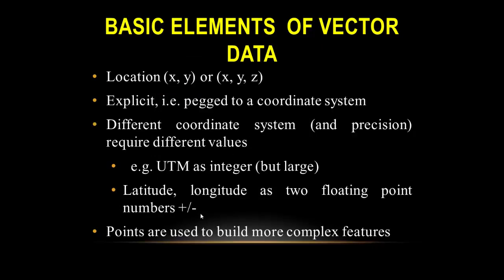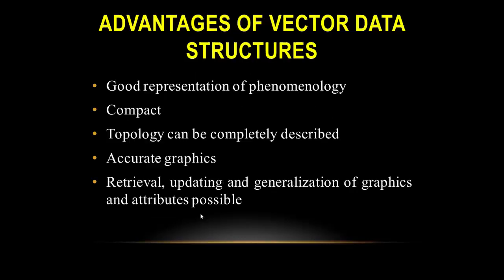The basic elements of vector data: for location, if 2D then XY coordinates; if 3D then XYZ. These are explicit and tied to a coordinate system. Different coordinate systems require different values — for example, UTM uses large integers, while latitude and longitude uses floating point numbers with positive and negative values. These are used to build more complex features.